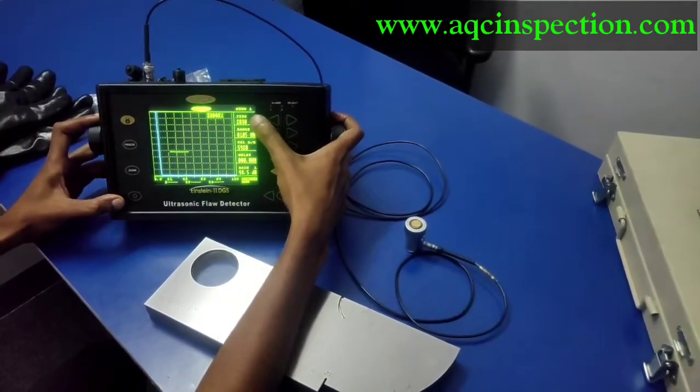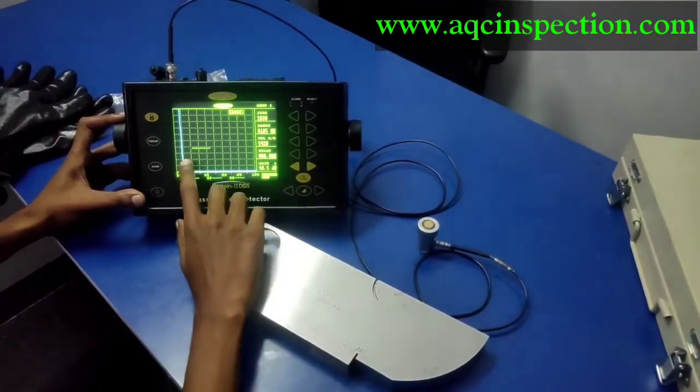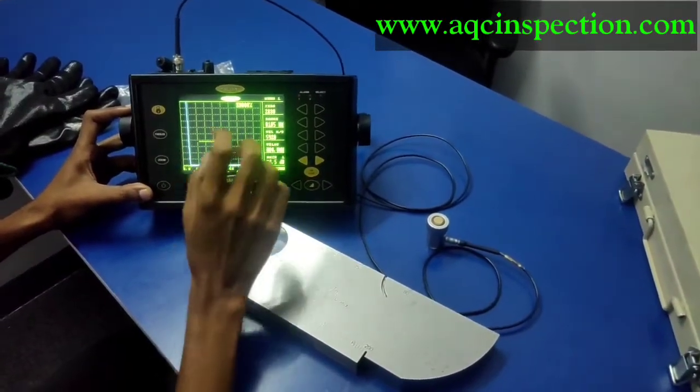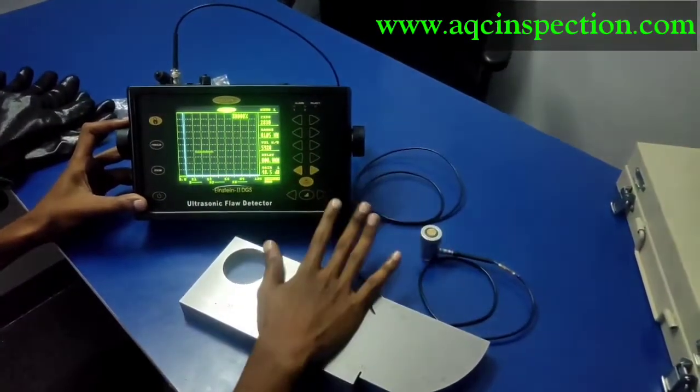This right here is the zero of the probe. We have to calibrate this to 25 mm which is a known thickness so that we get four backwall echoes properly. Once we calibrate this, then we can do the inspection.